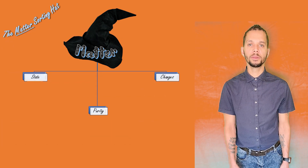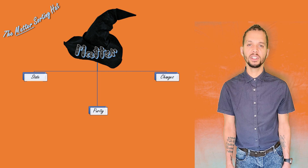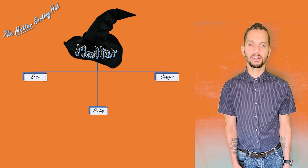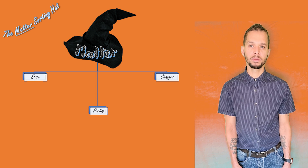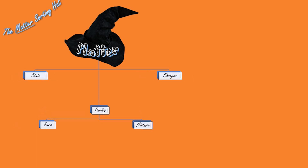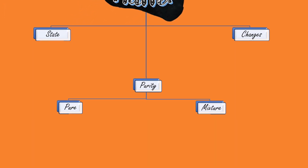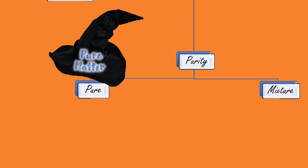All substances will contain features from each of these classes and will be sorted based on the characteristics of that matter. As we take a look deeper into the purity of a substance, we can sort out the matter based on if it is pure or if it is a mixture of some type.